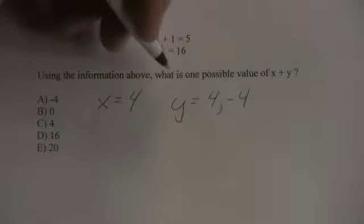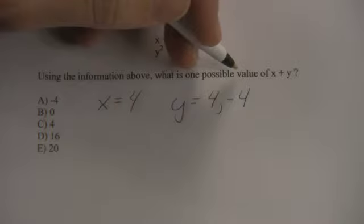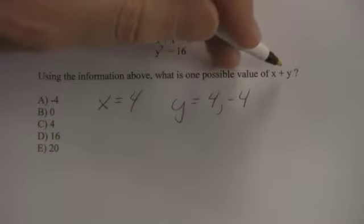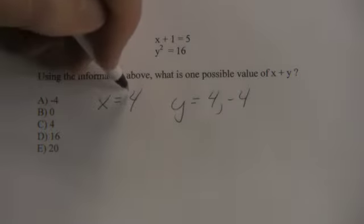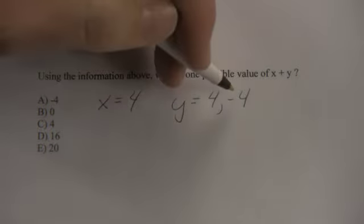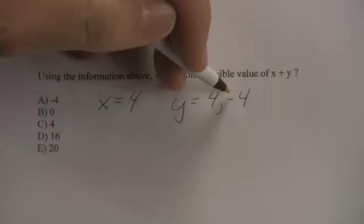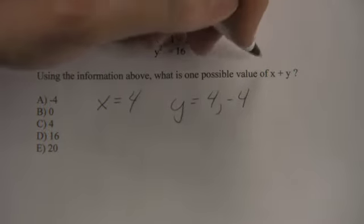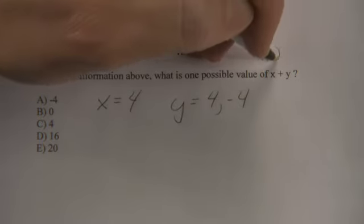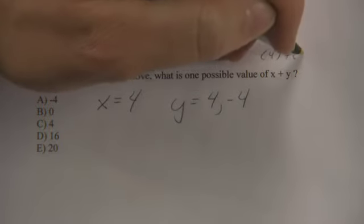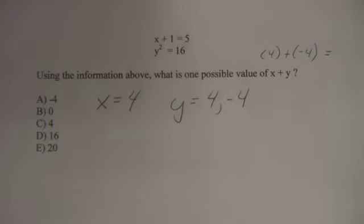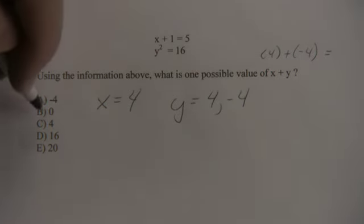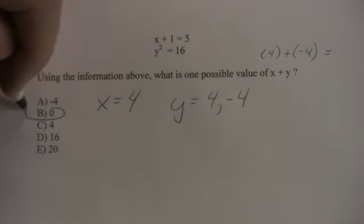It says what is one possible value of x plus y? Well, if you make x 4 and you make y negative 4, it's really just 4 plus negative 4. And 4 plus negative 4 equals 0. Choice B is correct.